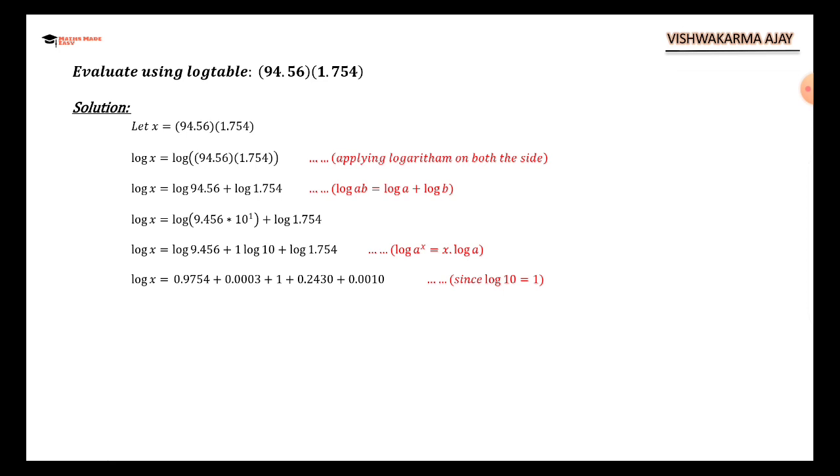Now if you refer to the log table, we can find 94 in column number 5 and mean difference 6, you will get 0.9754 plus 0.003 mean difference. And since log 10 equals 1, we have only 1 here. Similarly, 17 in column number 5 is 0.2430, and 17 in mean difference column number 4 is 0.001.